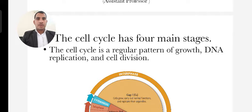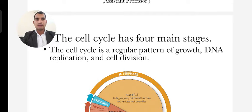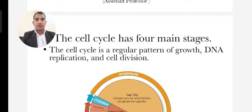The cell cycle has mainly the following stages. First of all, the cell cycle is a regular pattern of growth, DNA replication, and cell division. The cell cycle functions to continue growth, produce new daughter cells, and continue new modifications. These are very important for human bodies and various living organisms.